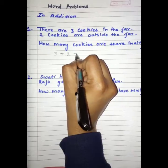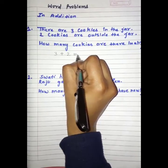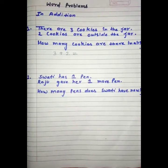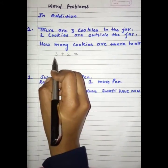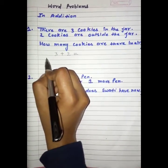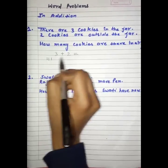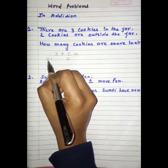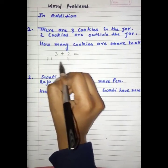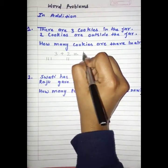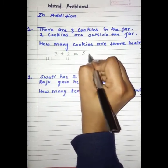So, students, how many cookies are there in all? We have to draw 3 lines: 1, 2, 3. And here 1, 2. Count all: 1, 2, 3, 4, 5. So, students, we have 5 cookies.